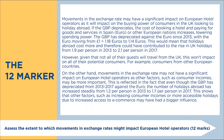The second paragraph needs to balance against the point just made. 'On the other hand, movements in the exchange rate might not have a significant impact on European hotel operators, as other factors such as consumer incomes may be more important. This is reflected in the fact that even though the Great British Pound has depreciated from 2013 to 2017 against the euro, the number of holidays abroad has increased steadily from 1.2 per person in 2013 to 1.7 per person in 2017. This shows that other factors such as increasing consumer incomes or more accessible holidays due to increased access to e-commerce may have had a bigger influence.' The two paragraphs contrast and offer different sides of the argument, so with a good conclusion, this should get into the top mark band of 9 to 12 marks.